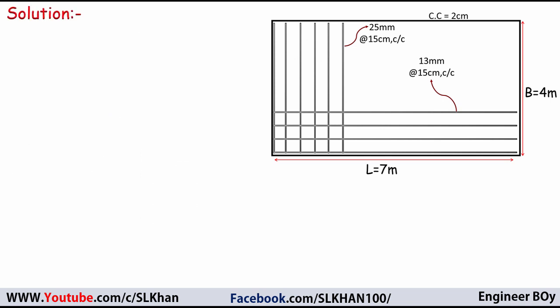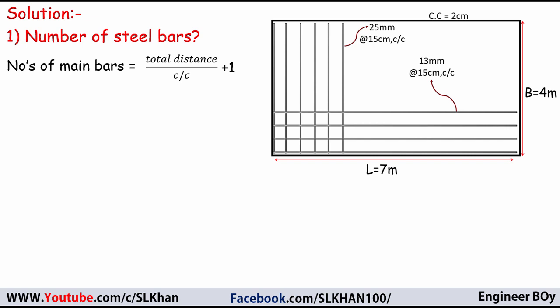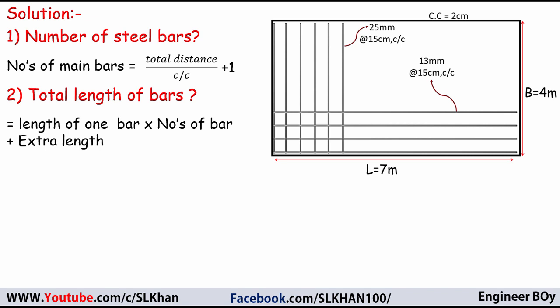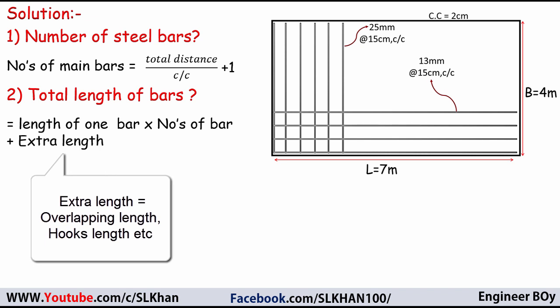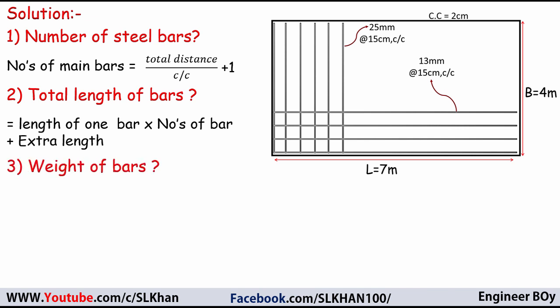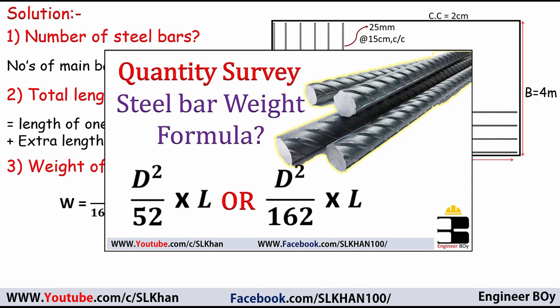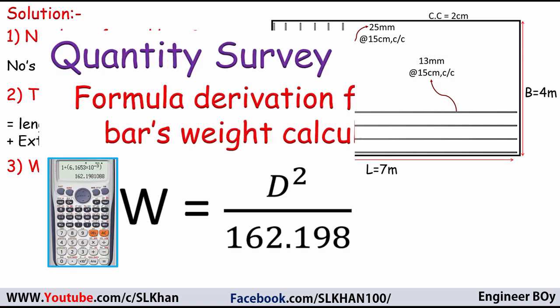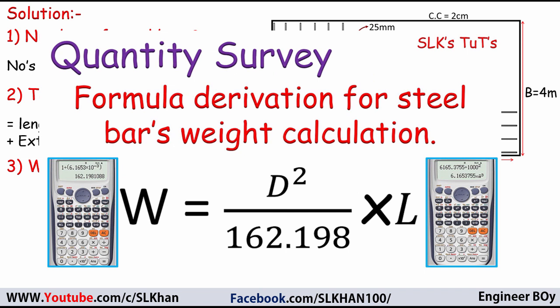The solution will be done in a few steps. Step one: number of steel bars = total distance divided by center-to-center, plus one. Step two: total length = length of one bar times number of bars, plus any extra length for overlaps or hooks. Step three: weight of bars using the formula W = d² / 162.198 × L in the MKS system, or d² / 52.9 × L in the FPS system. The derivation of this formula is linked in the video description.